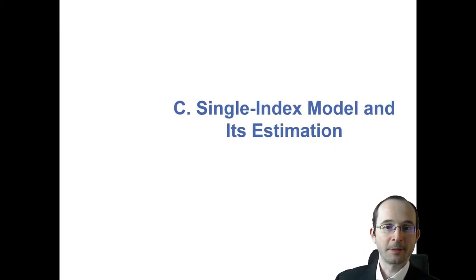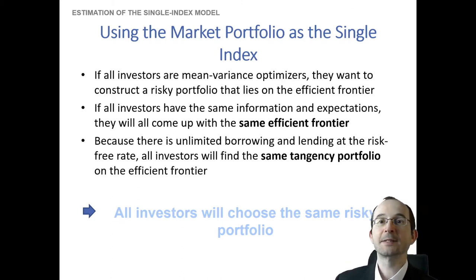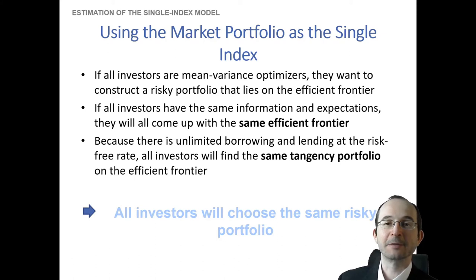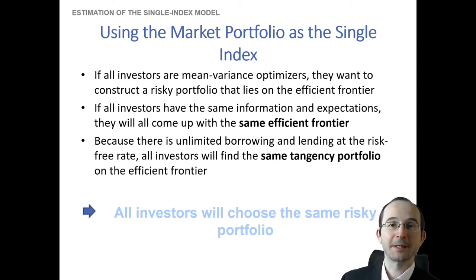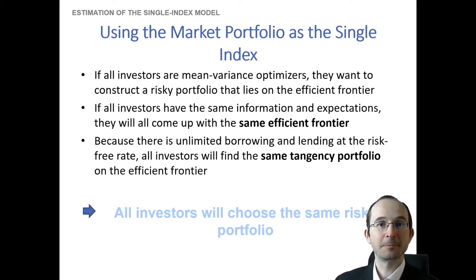So how do we actually estimate a single index model? Well, there's a sound argument to be made for taking the market portfolio as that single macroeconomic factor. Remember, technically it can be other macro factors that there is evidence for risky assets co-moving with, and you should really think of the single index model as a descriptive model primarily. It's based on this premise that risky assets move with macroeconomic factors, but the market portfolio is a particularly likely candidate as the macro factor.